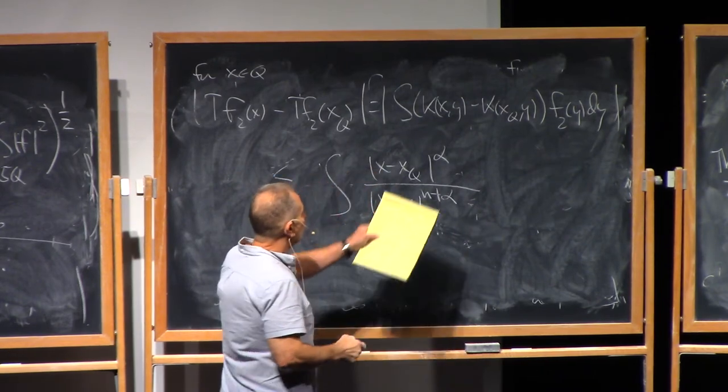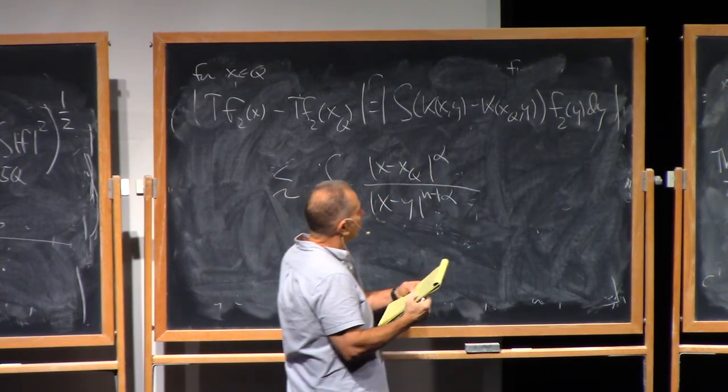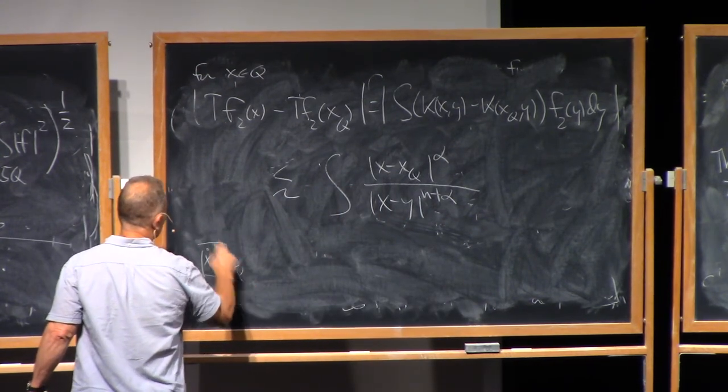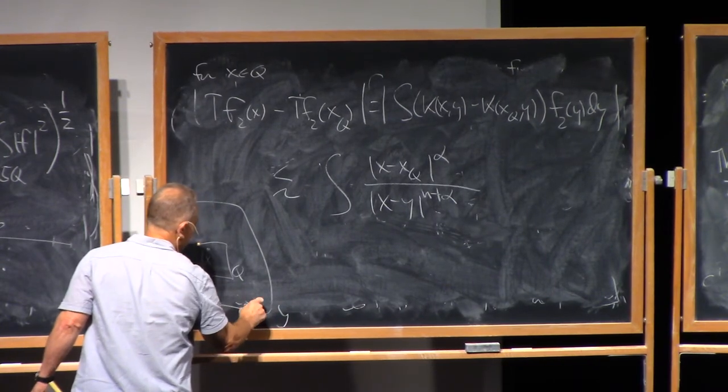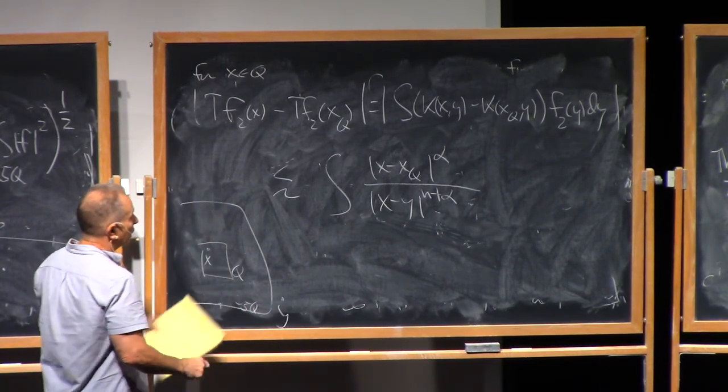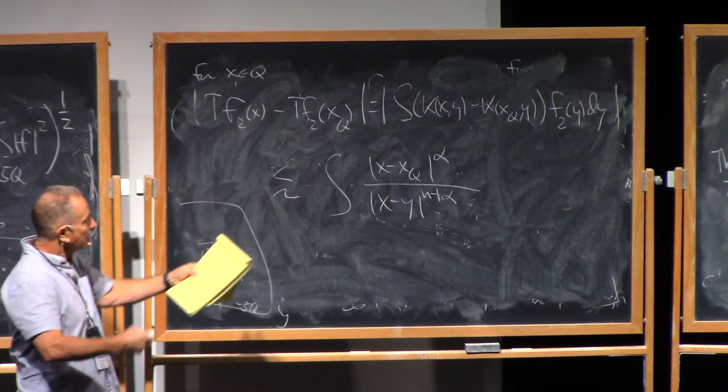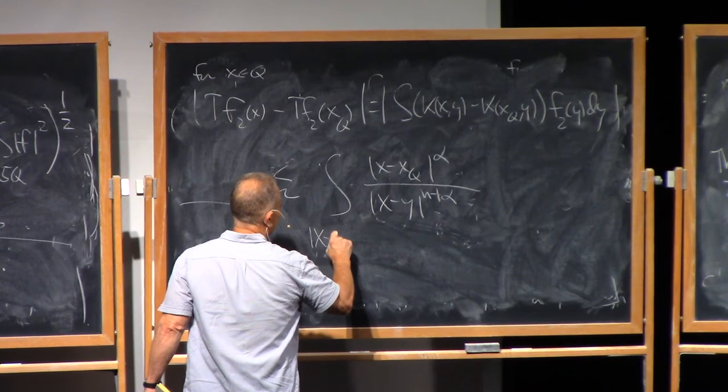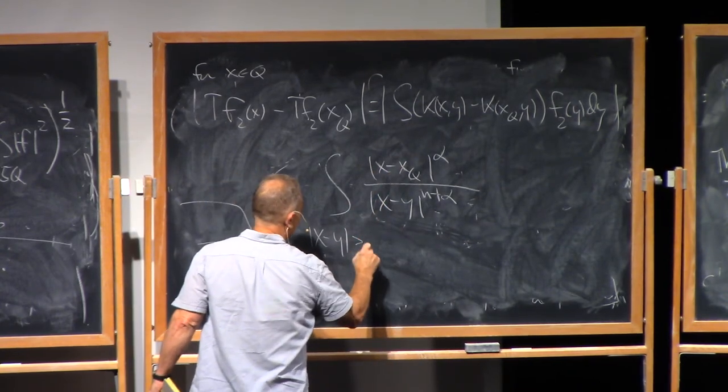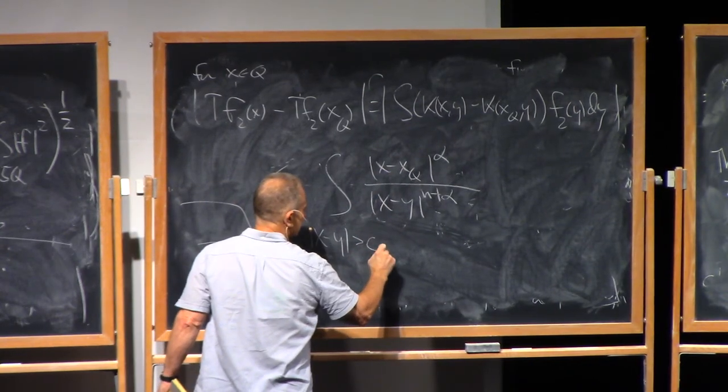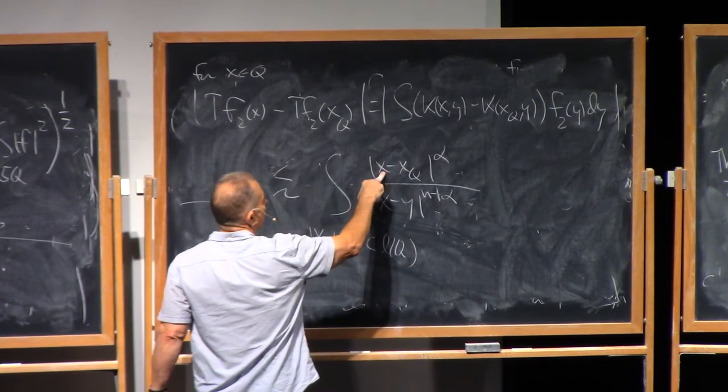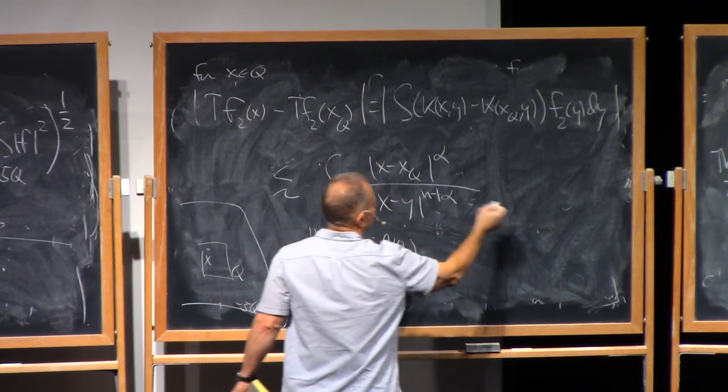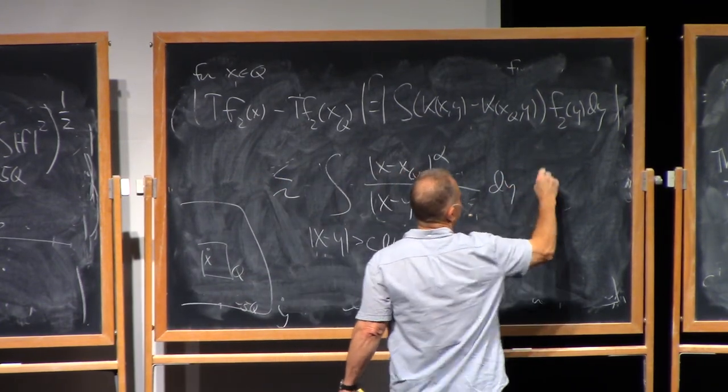And here, then, we're integrating. The picture is this. X is in the cube Q. Y is outside five times Q. So the distance from X to Y is always bigger than some constant times the length of Q. So we're integrating where X minus Y, because of the truncation of F2, we're integrating where X minus Y is bigger than a constant times the length of Q. On the other hand, X is in Q, so X minus XQ is bounded by a constant times the length of Q. And then we just pull out the L-infinity norm.